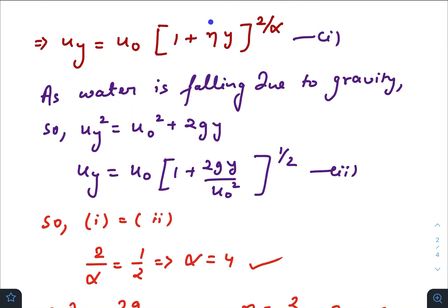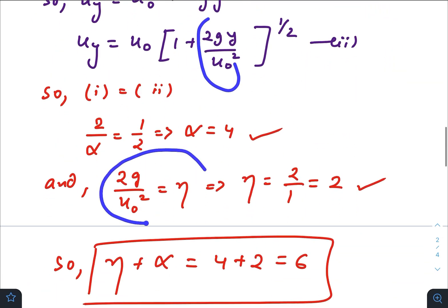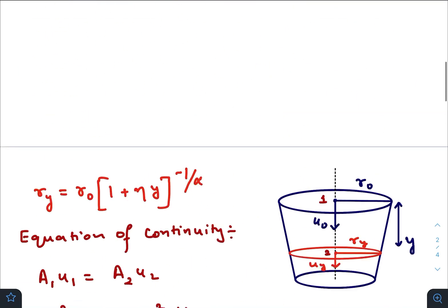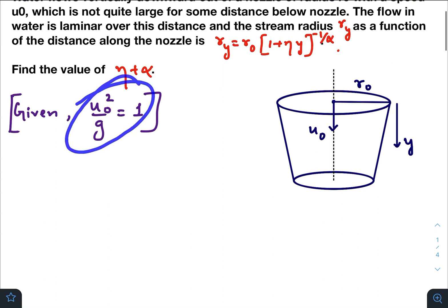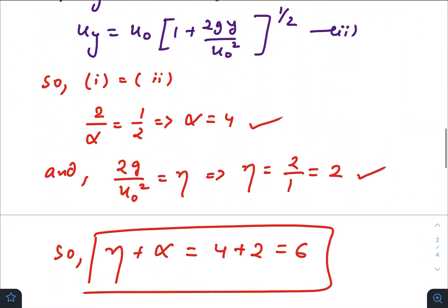And just compare these two coefficients of y: eta would be equal to 2g over u naught square. And g over u naught square is 1, it is already given in the first page. So eta equals 2.